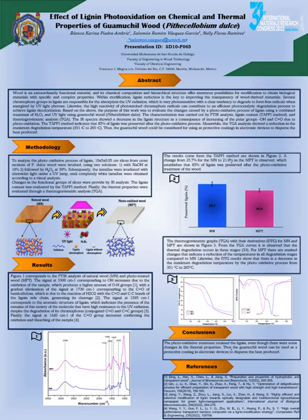The high reactivity of photo-excited chromophore radicals can contribute to an effective photocatalytic degradation process to achieve lignin bleaching. The purpose of this work was to evaluate the changes caused by the photo-excited process of lignin through a combined treatment of hydrogen peroxide and ultraviolet light using Guamachil Wood.